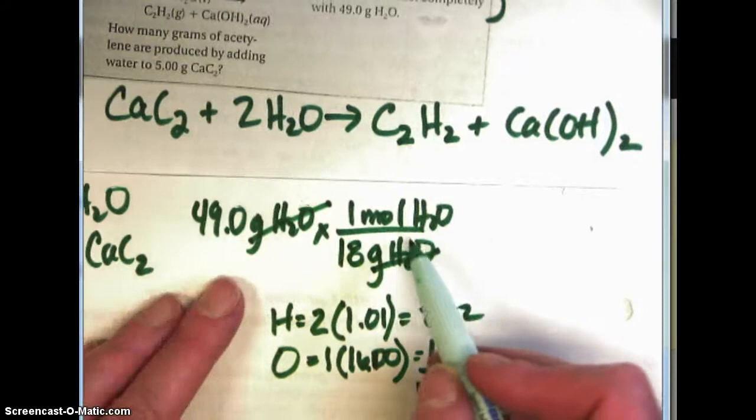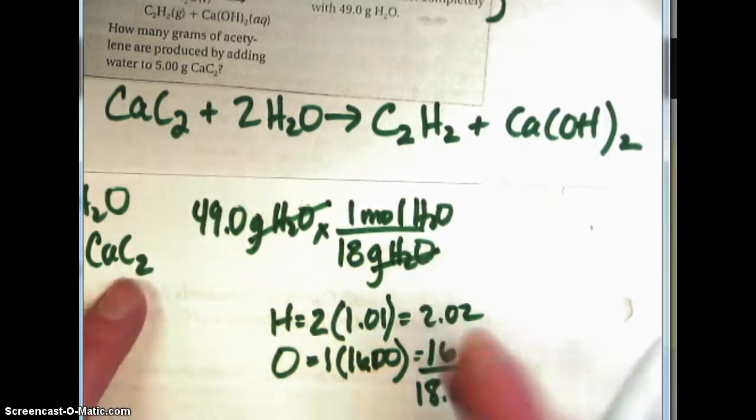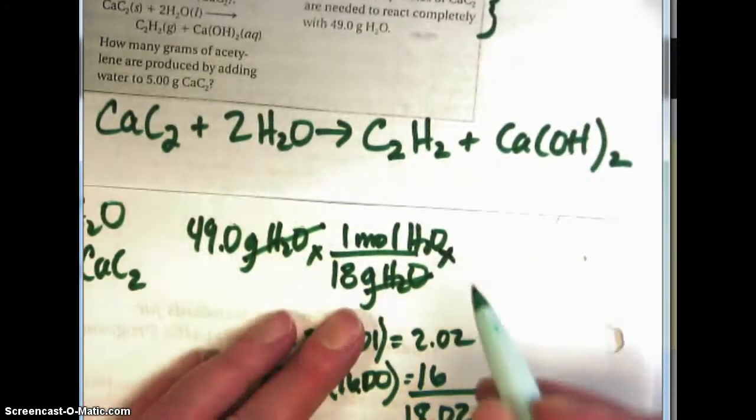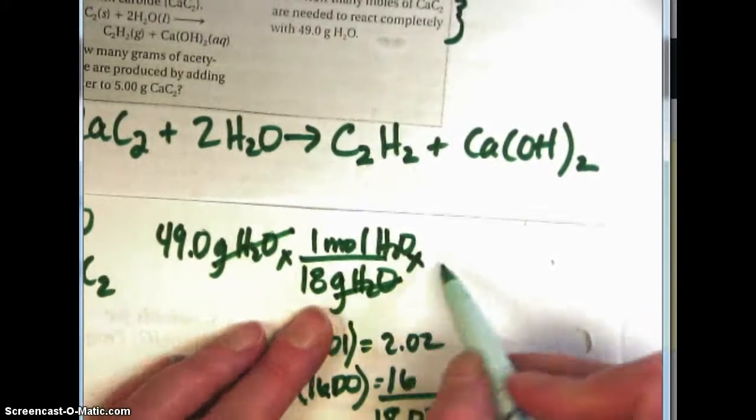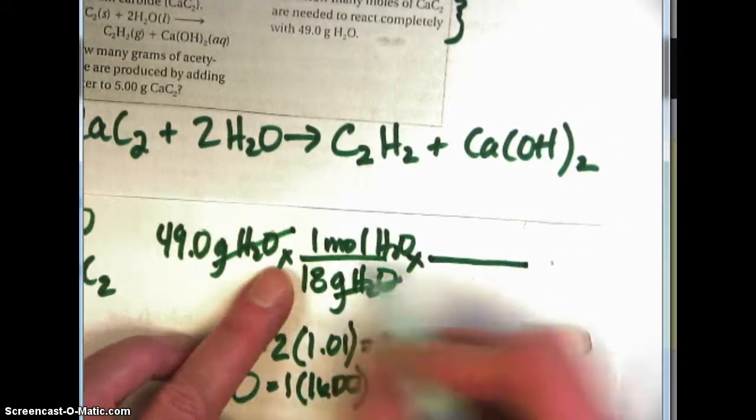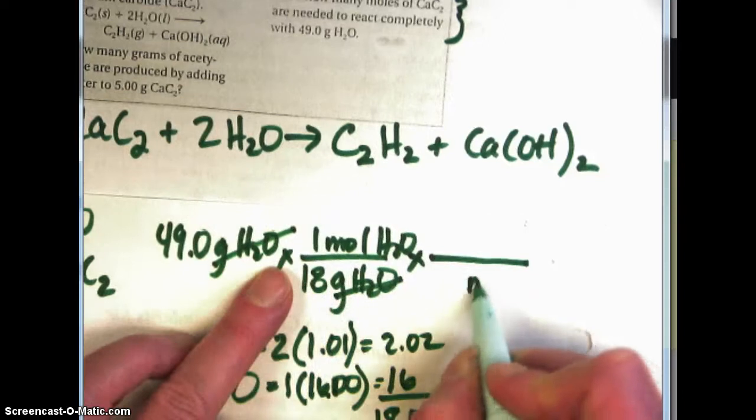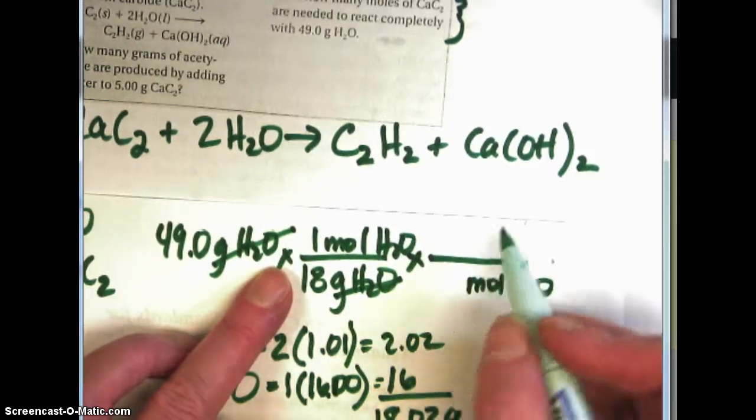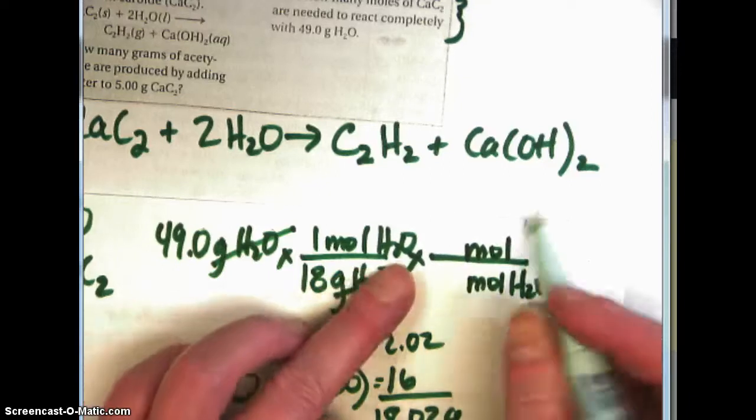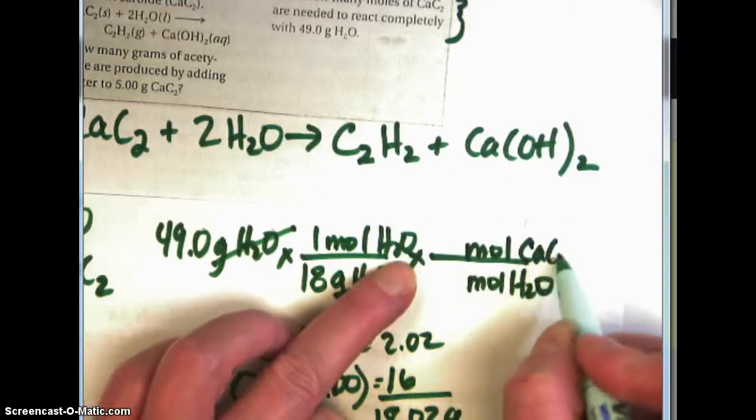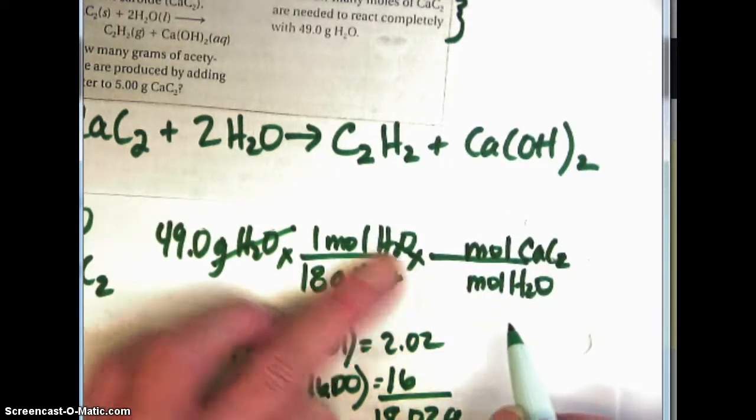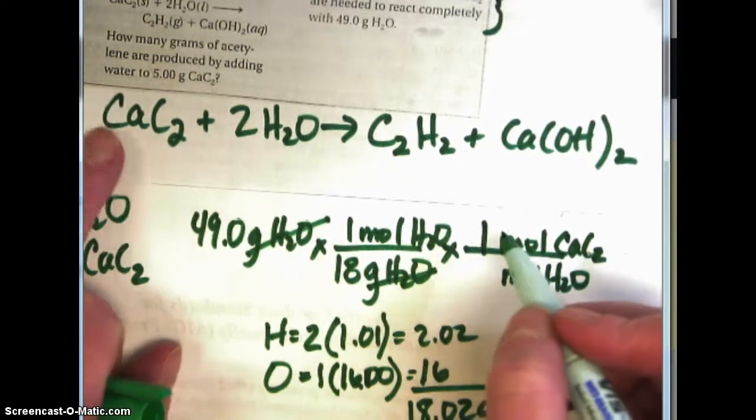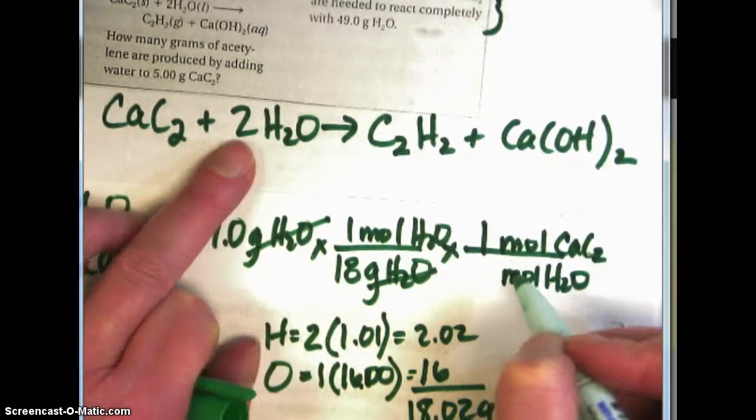And now I need to go to moles of calcium carbide. So I'm going to use the mole to mole ratio as the second step. And since I have a mole of water on the top I'm going to have a mole of water on the bottom. And I'm going to have a mole of the unknown which is calcium carbide on the top. And the numbers are going to be a 1 because if there's nothing in front of it it's a 1, 2, 2.